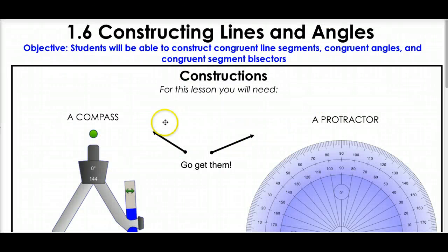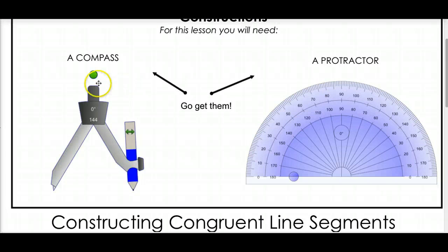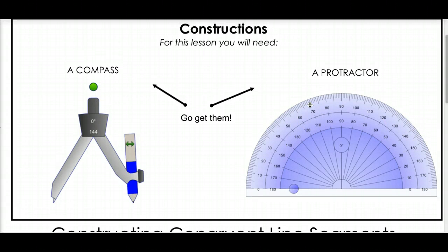Okay students, we're going to be doing Lesson 1.6, Constructing Lines and Angles. The objective is for you, the student, to be able to construct congruent line segments, congruent angles, and congruent segment bisectors. What you'll need for today is a compass and a protractor, so grab that out of your little supplies box. Now, good news, we're not going to be doing a lot of mathy math, not a lot of x and y's, not a lot of numbers. We're just going to be drawing some basic geometric figures.